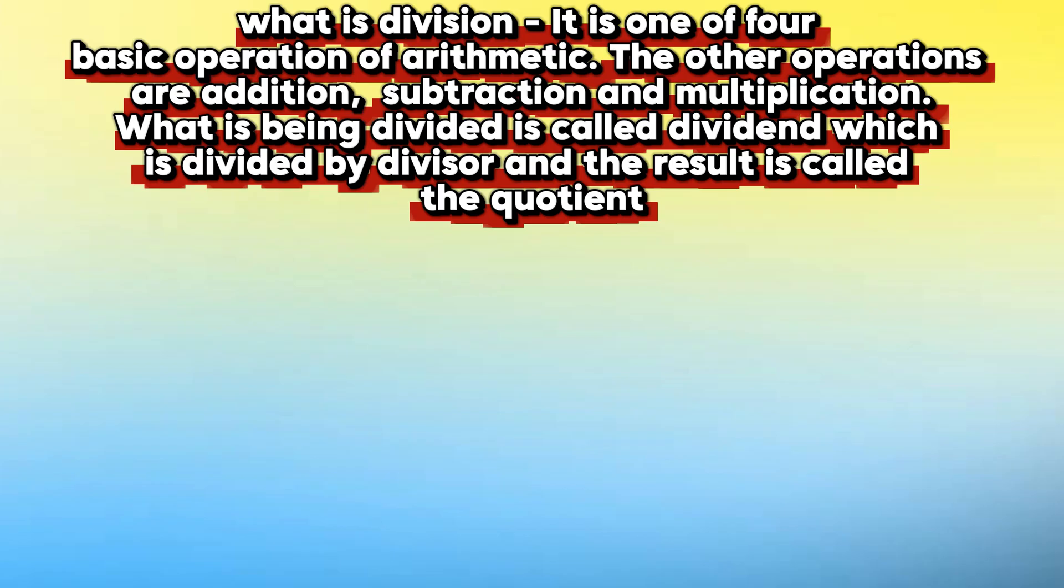What is being divided is called the dividend, which is divided by the divisor, and the result is called the quotient. Herein, 7 is the divisor and 4 is the quotient. 31 is the dividend and 3 is the remainder.